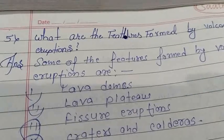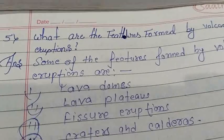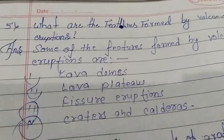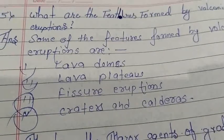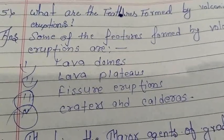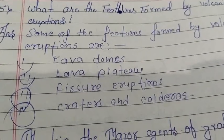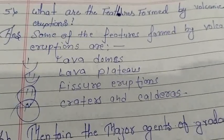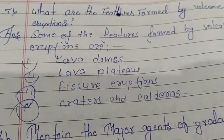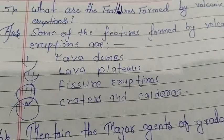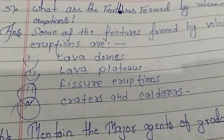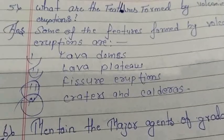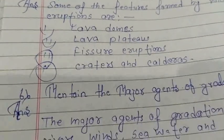Some of the features formed by volcanic eruptions are lava domes, lava plateau tube, fissure eruptions, and craters and calderas. Now come to question number second.